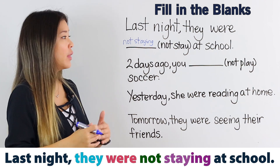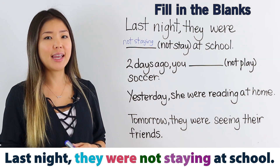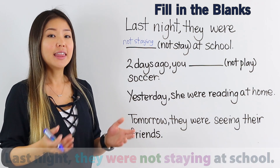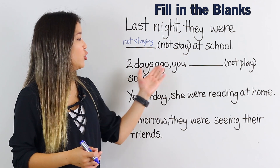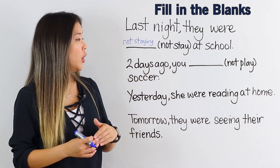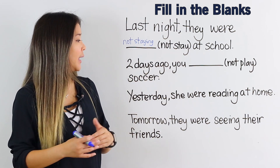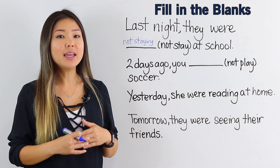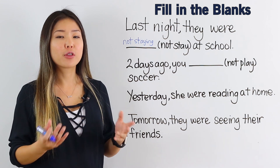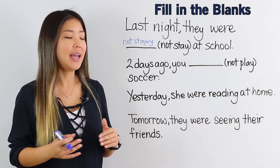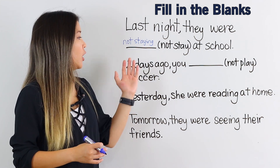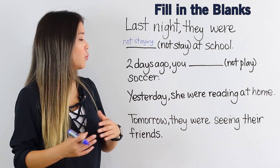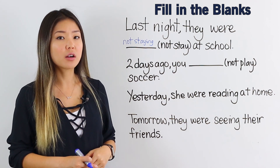Last night, they were not staying at school. The next sentence says: Two days ago, you blank soccer. Again, try the negative for the verb play. Two days ago, blank not play soccer.